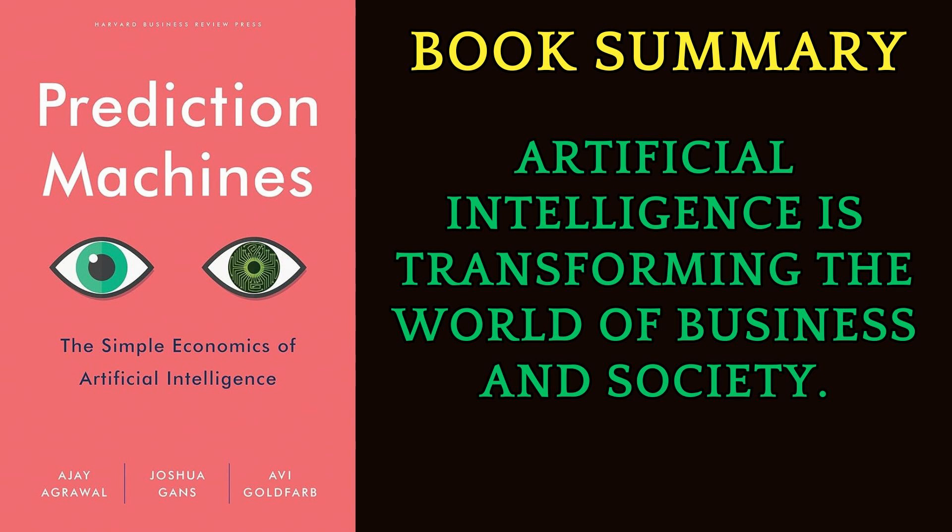The book is divided into four parts. Part 1: Machine Intelligence — This part introduces the basic idea of AI as a prediction machine, and how it changes the way we make decisions under uncertainty. It also explains the key components of AI, such as data, algorithms, and feedback. Part 2: Tools — This part explores how AI impacts different domains of business, such as strategy, innovation, marketing, pricing, and competition. It also provides some practical advice and tools for managers and entrepreneurs to leverage AI in their organizations.